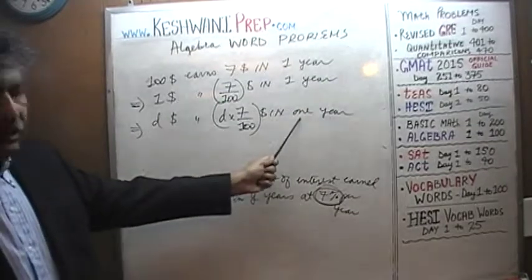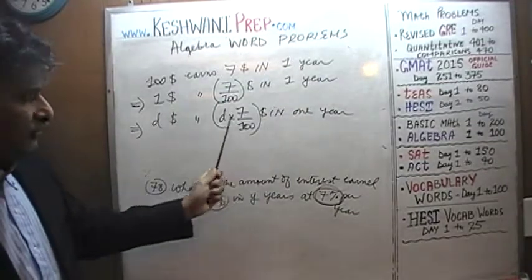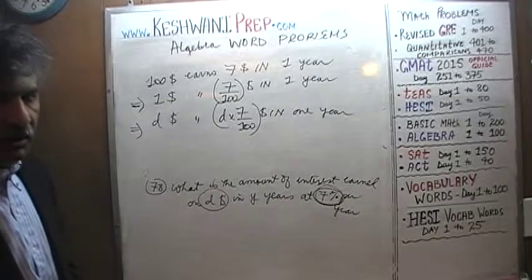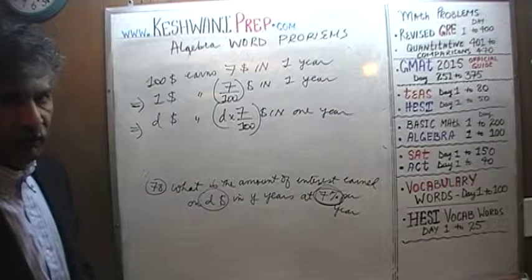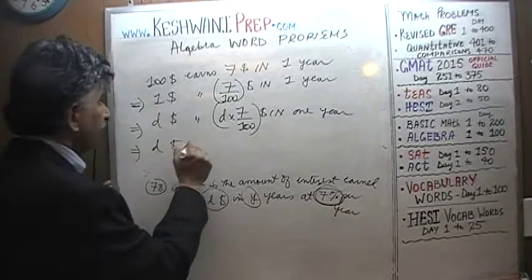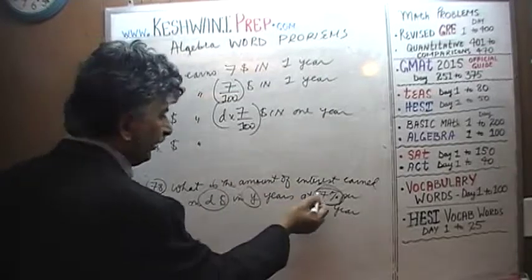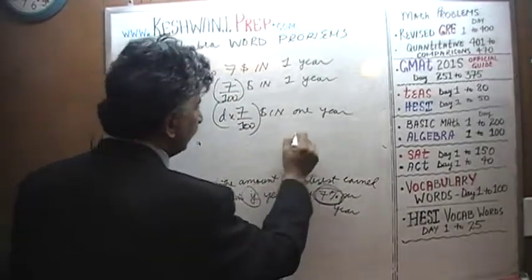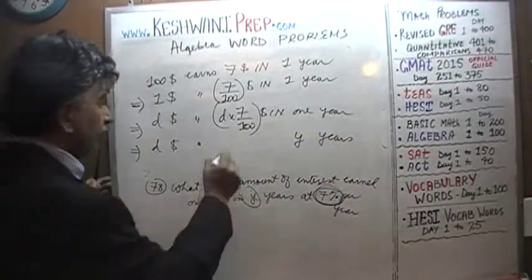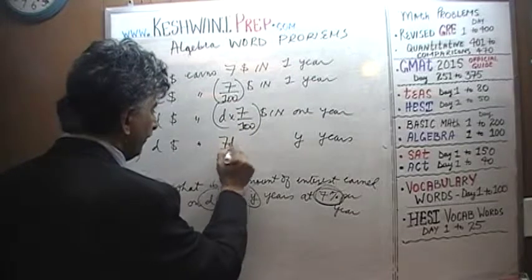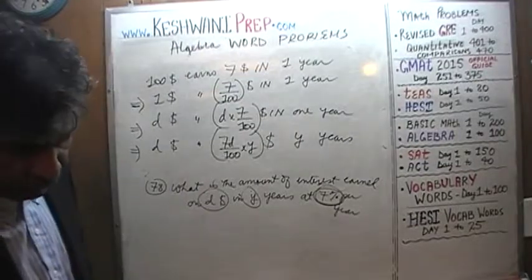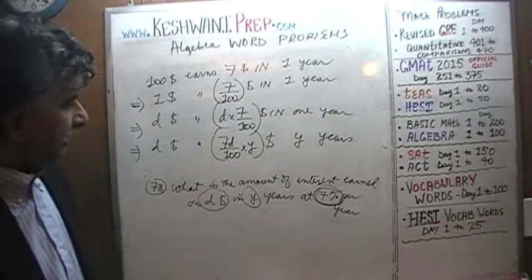If this is how much we earn in one year, then keeping the money for 2 years earns twice as much, 3 years three times as much, and Y years earns Y times that amount. D dollars at 7% for Y years should earn Y times D × 7/100. Simplifying, D times 7 is 70, so the answer is 70Y/100 dollars. There is your answer — the final answer is 70Y/100.